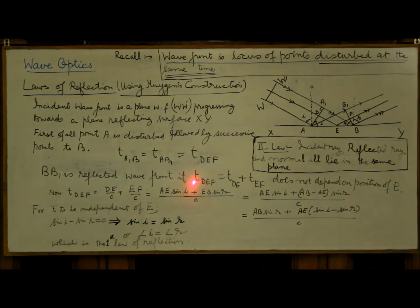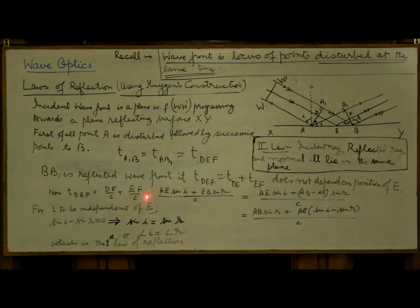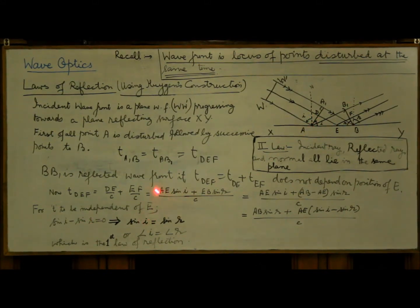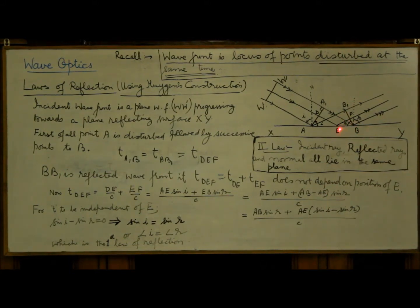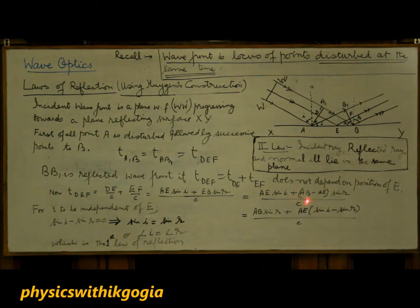BB1 is a reflected wavefront if the time along DEF does not depend on the position of E — that is, the time along DEF for any point between A and B should be independent of the position of E. The time is given by DE over C plus EF over C. From the diagram, DE equals AE sine I and EF equals EB sine R. Replacing EB by AB minus AE, you get AB sine I plus (AB minus AE) sine R, divided by C. Taking AE common, you get AE(sine I minus sine R) plus AB sine R, all over C.